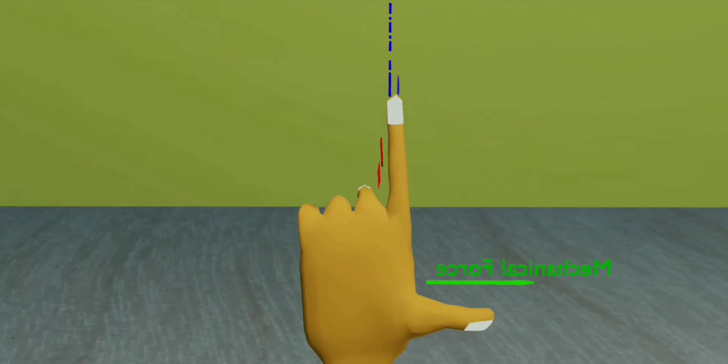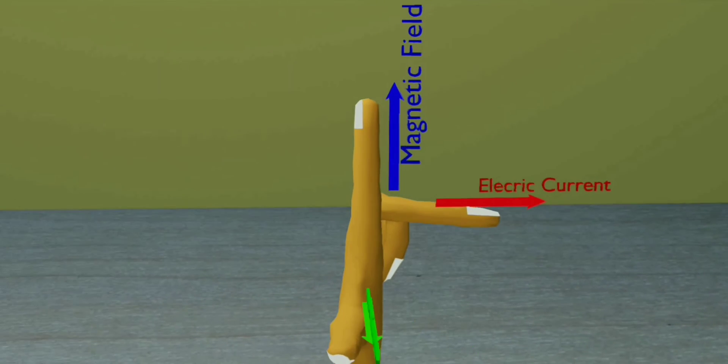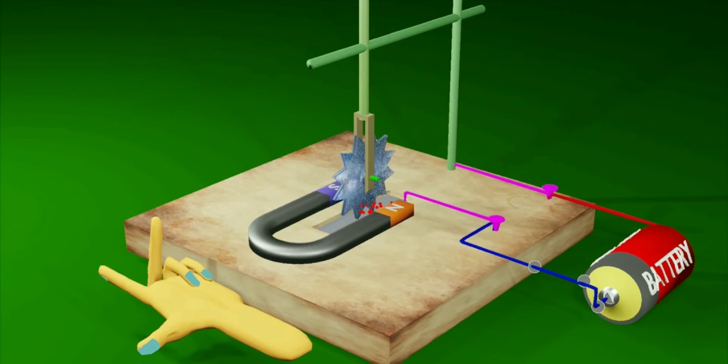Fleming's left-hand rule can easily be demonstrated by using this Barlow's wheel. Let us bring a left hand. The magnetic field is aligned to the forefinger, and an electric current is flowing along the middle finger.